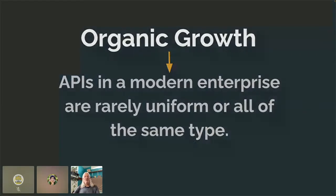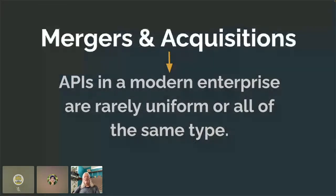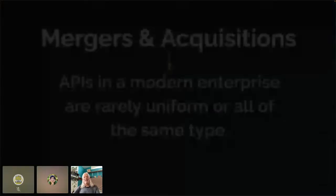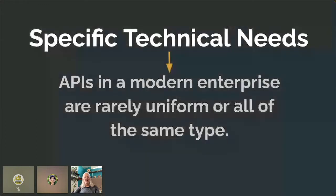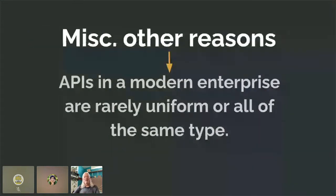There are also mergers and acquisitions that bring in very different approaches to the same overall goal, which results in a non-uniform API landscape. There are also specific technical needs — one business unit decides this is what we need and what the other team is doing isn't satisfying requirements, so they do it their own way. The fact remains that in a large modern enterprise you rarely look at APIs all of the same type.